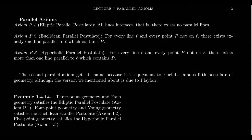Axiom 5 for Fano geometry says that parallel lines don't exist. Axiom 5 for Young geometry says that given a line and a point off a line, there's a unique parallel line to the given line through the given point. So it doesn't just say that parallel lines exist — it says they exist up to some uniqueness criteria.